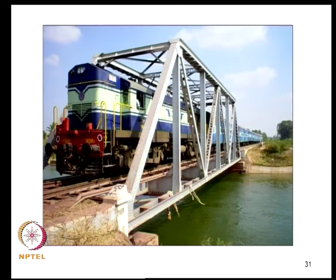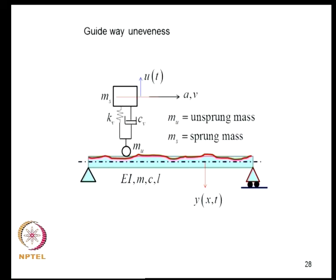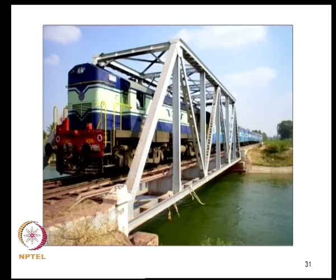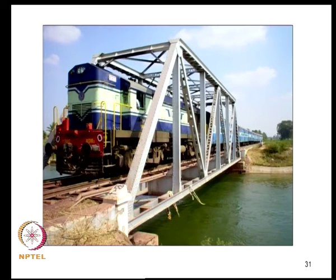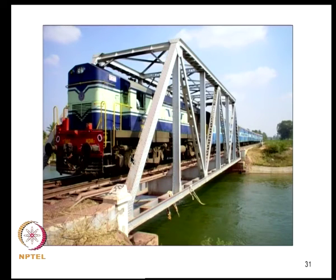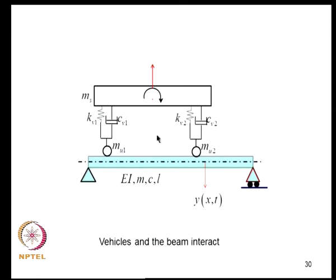In practice the supporting structure is a 3D structure like a lattice girder bridge, and the moving vehicle itself is a complex engineering system. To realize the full potential of finite element method, the supporting structure should be modeled with a finite element model and the moving system with another finite element model, with these two models moving relative to each other.